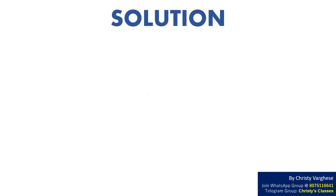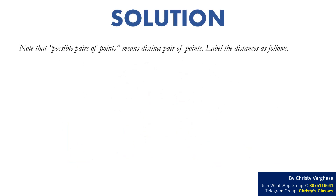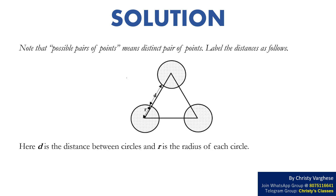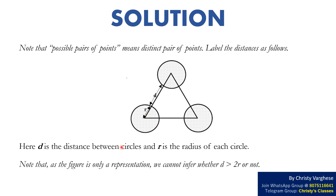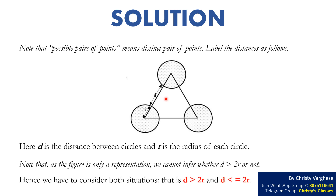Note that possible pairs of points means distinct pairs of points. Label the distances as follows: D is the distance between circles and R is the radius of each circle. As the figure is only a representation, we cannot infer whether D is greater than 2R or not. Hence we have to consider both situations — D greater than 2R, and D less than or equal to 2R.